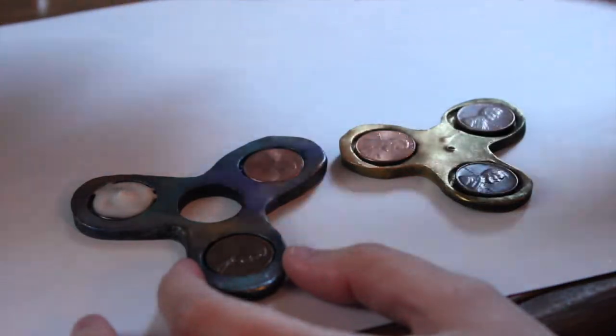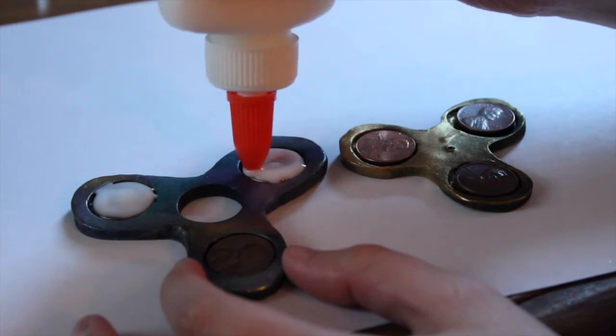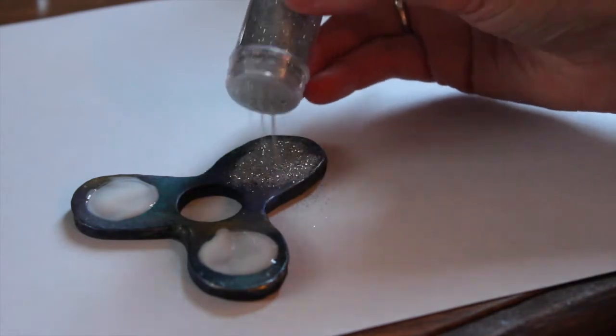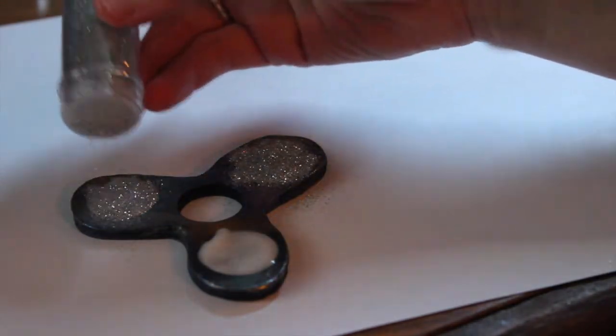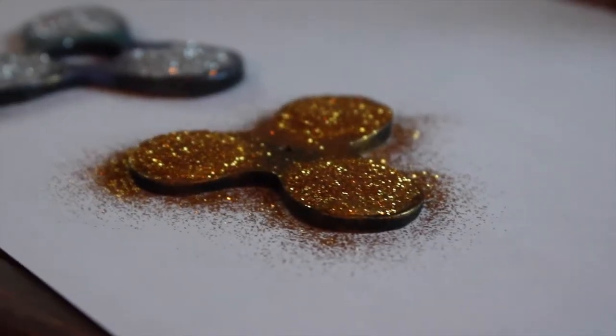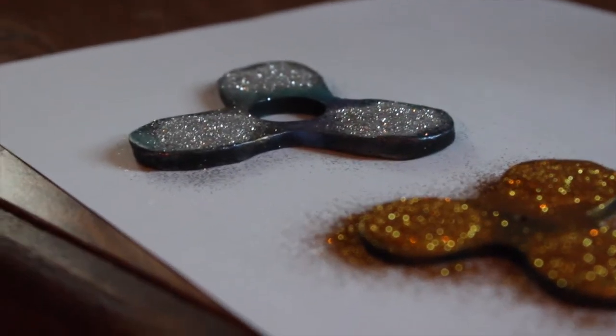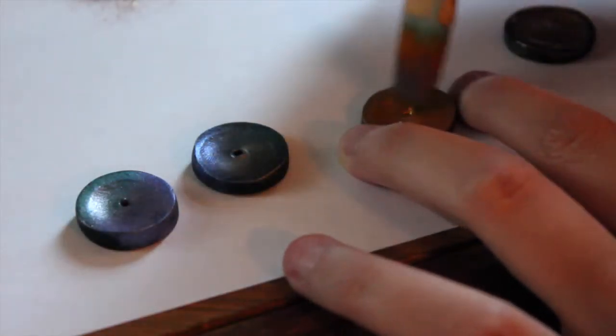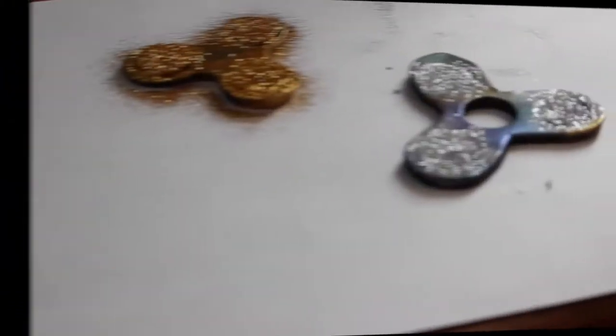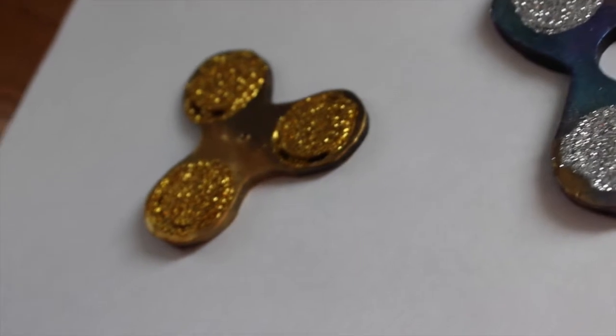Now you're gonna want to take some Elmer's glue, Mod Podge, just some kind of glue that'll dry clear, and you're gonna put those over top of where you put your weights. Then I'm just sprinkling some glitter on there just so we don't see the pennies and they look kind of ugly. We're just trying to make it a little bit prettier. So now I'm just gonna let those both dry, and I'm gonna take the buttons and glaze them just because the pigments tend to dust off.